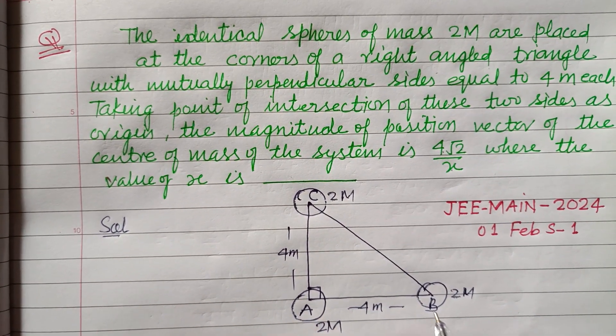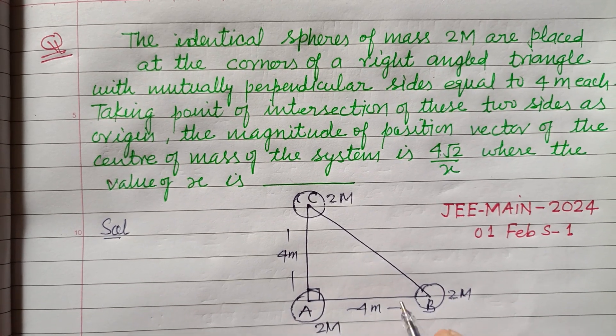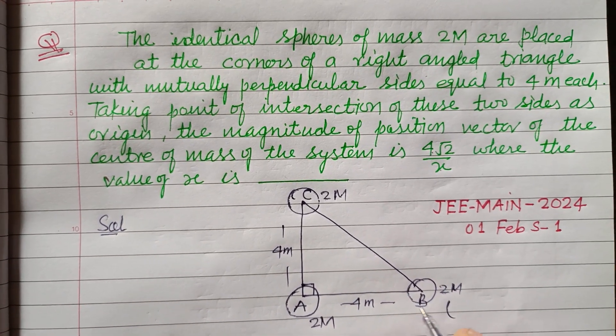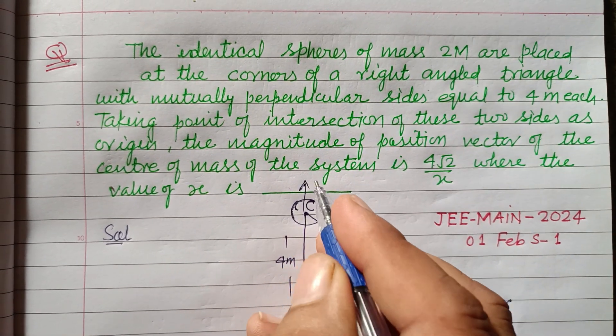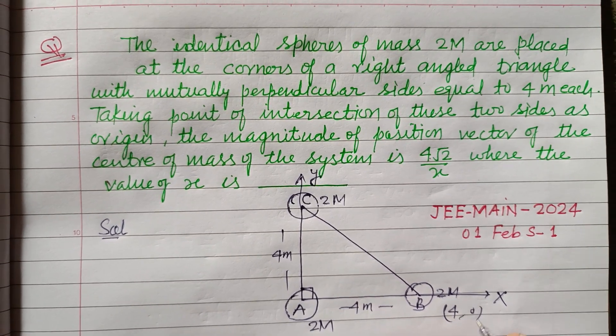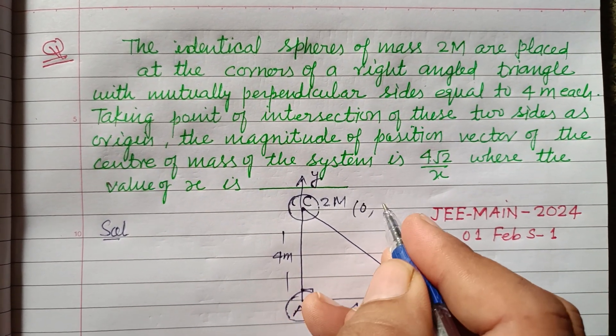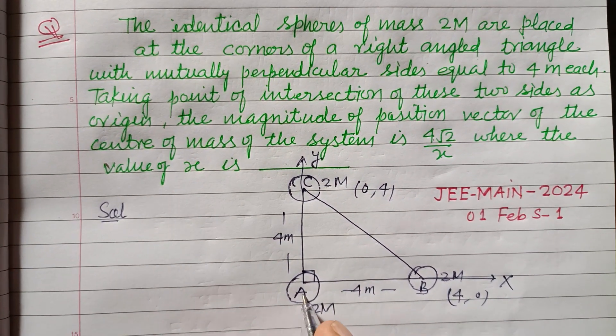So this point will be, if we take this as x-axis and this as y-axis, then this is (4,0) and this will be (0,4) and this is (0,0) because it is at origin.